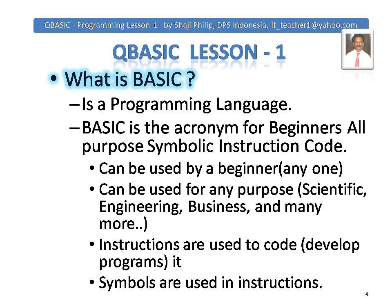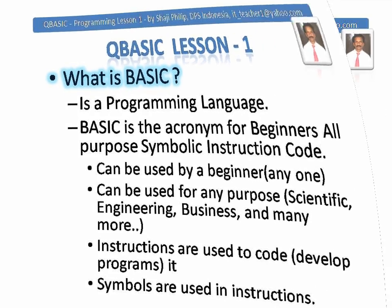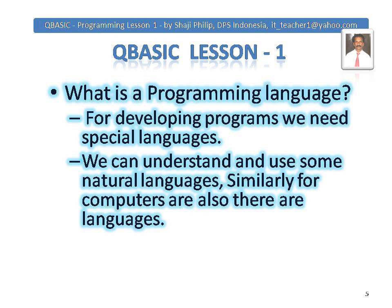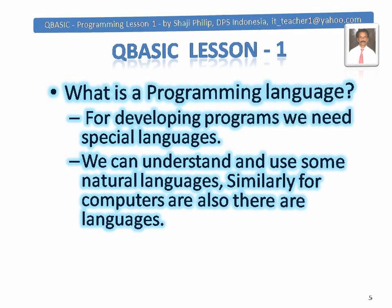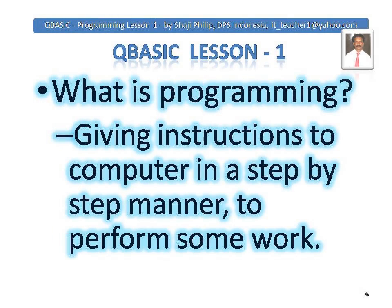Instructions are given to computers to perform some tasks. What is a programming language? For developing programs we need special languages. We can understand and use our natural languages — English or any language which we use — similarly, computers also have languages. We should know these languages, then only we will be able to communicate with computers. What is a program? Giving instructions to a computer in a step-by-step manner to perform some work. For example: how to keep an elephant in a fridge — Step 1: open the fridge. Step 2: keep the elephant inside. Step 3: close the door. Similarly, we can break our work into steps and perform them. This is what programming is.